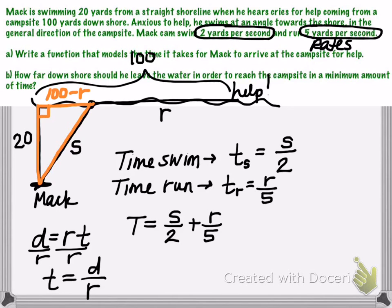And then we know that the three sides of a triangle, a right triangle, are related by the Pythagorean theorem. So Pythagorean theorem is going to be the leg of the triangle, 20 squared, plus the second leg, which is 100 minus R, squared, is equal to the hypotenuse squared, which is S squared.